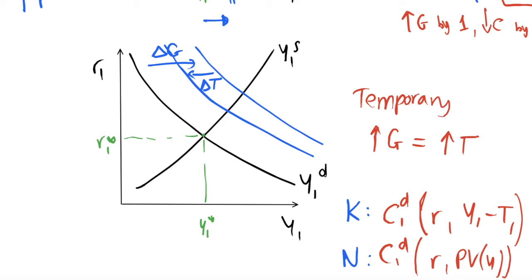In the neoclassical model, with a permanent change in taxes we factor that fully into the model, whereas with a temporary change we know taxes will return to their previous level, so consumers smooth consumption over time — borrowing forward — which is why the curve shifts differently for temporary versus permanent changes. But in the Keynesian model, individuals don't care whether the change is temporary or permanent; they only think about their income today. This is just a different assumption in a different model, and we need to be clear about what each model assumes.